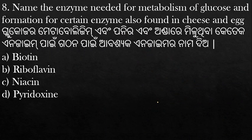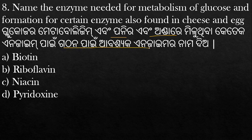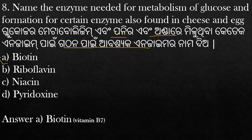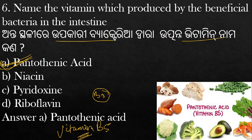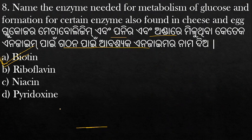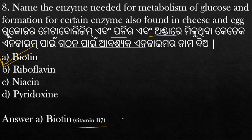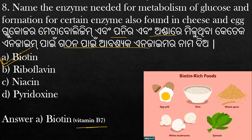Name the enzyme needed for metabolism of glucose and formation of certain enzymes, also found in cheese and eggs. The options are biotin, riboflavin, and pyridoxine. The answer is biotin, which is Vitamin B7. Biotin-rich foods include cheese, oats, wheat germ, white mushrooms, and spinach.